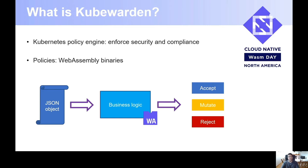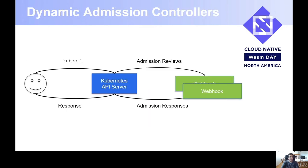So, if we think in isolation about this, we are processing one request and we can either do the acceptance, rejection, or mutation of that request. But how does Kubewarden intercept requests and provide responses with a decision? Because this is targeting Kubernetes — how does this integrate with Kubernetes? And for that, Kubernetes has an answer, and this is called dynamic admission controllers.